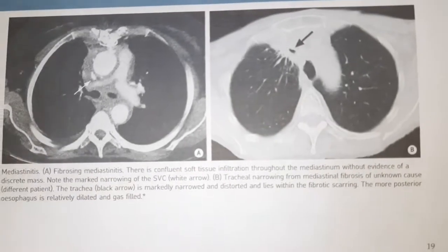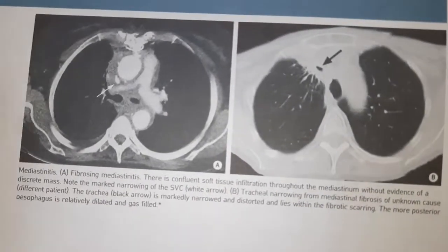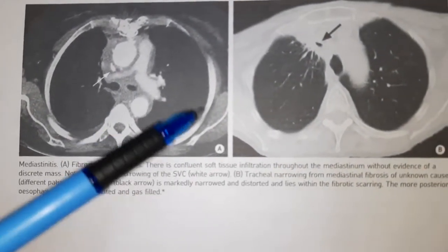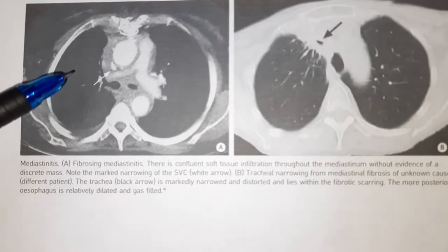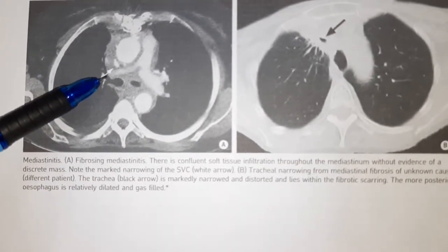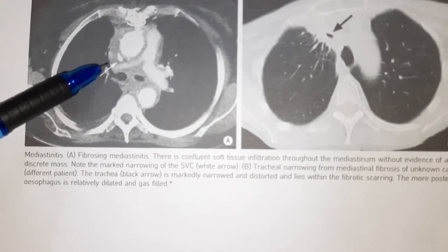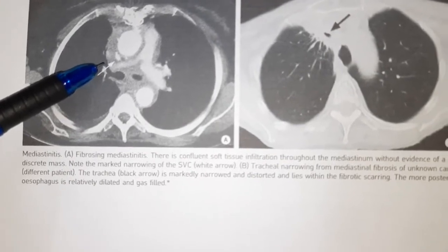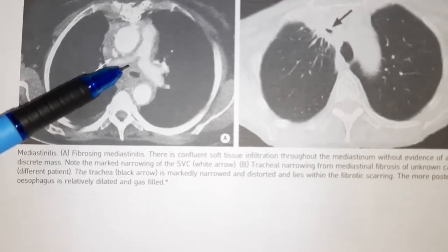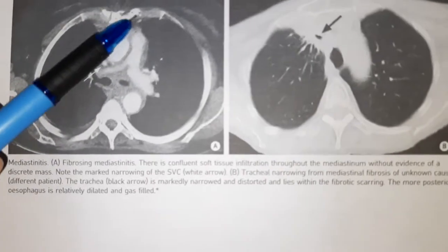Hello friends, this is the picture of a chest X-ray. If you see, this is the axial chest X-ray where you can see there is soft tissue infiltration here. You can see the soft tissue infiltration which is seen in the mediastinum.